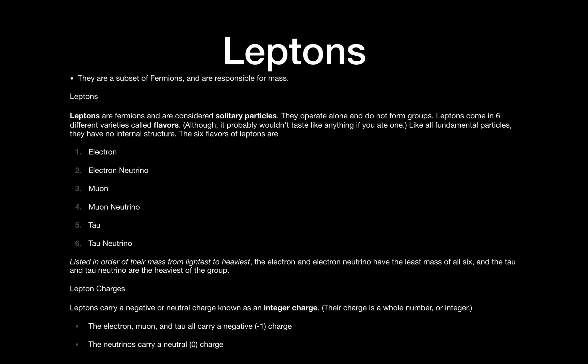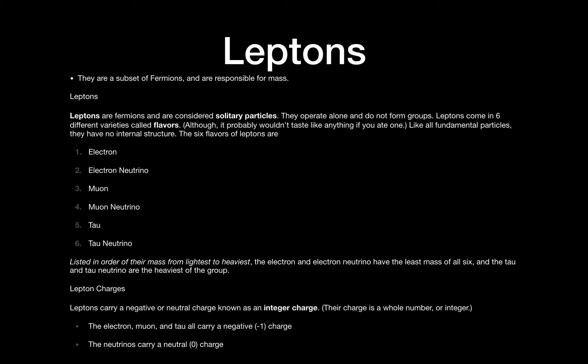So what are leptons? Leptons are a subset of fermions and are again responsible for mass. They are themselves fundamental particles—that is, they cannot be broken down further into any other particles. Leptons are also known as solitary particles. You will always find them in isolation; they do not be grouped together with any other particles. They operate alone and do not form groups. There are six different types of leptons: the electron, electron neutrino, muon, muon neutrino, tau, and the tau neutrino. For the AS level syllabus, you need to know only the first two. However, we will dive very briefly into the other four as well.